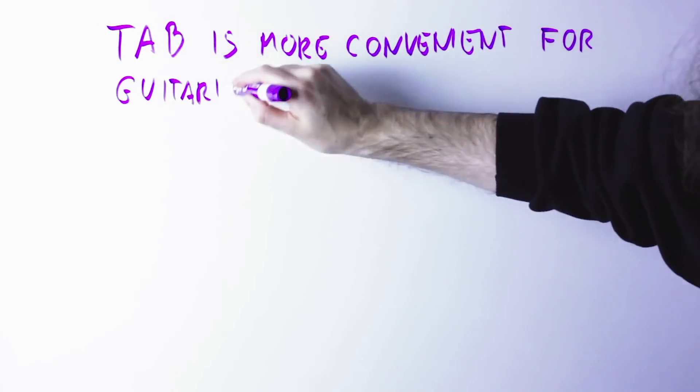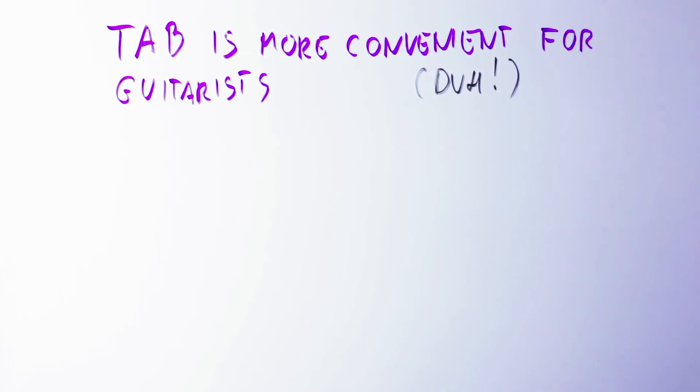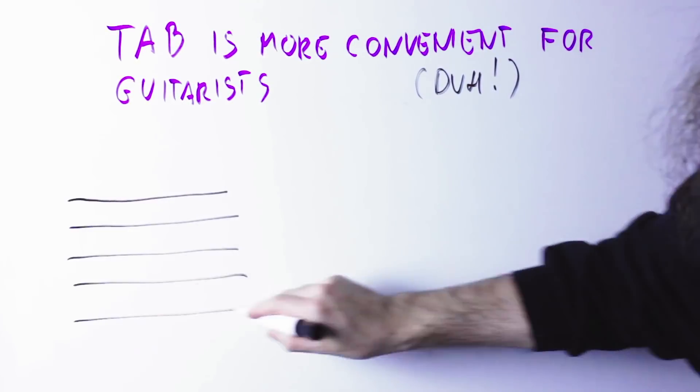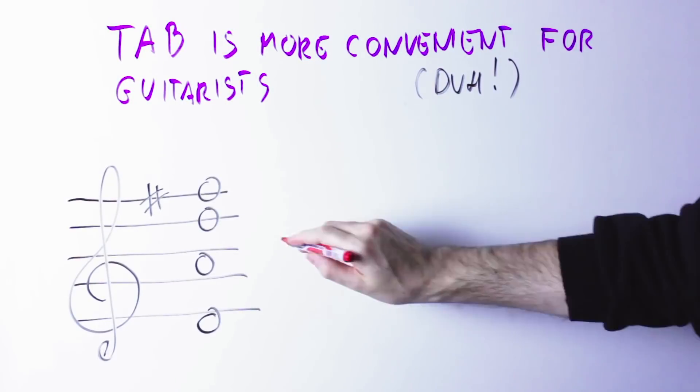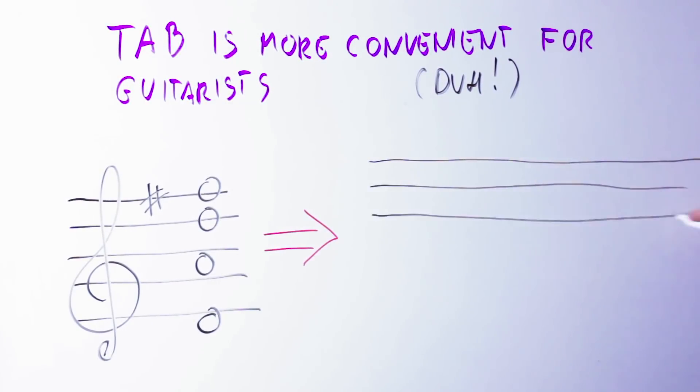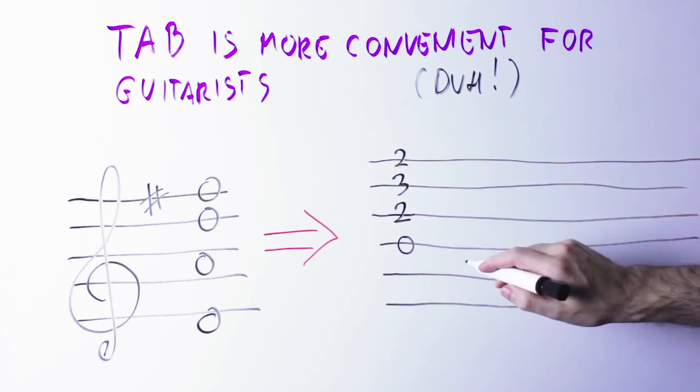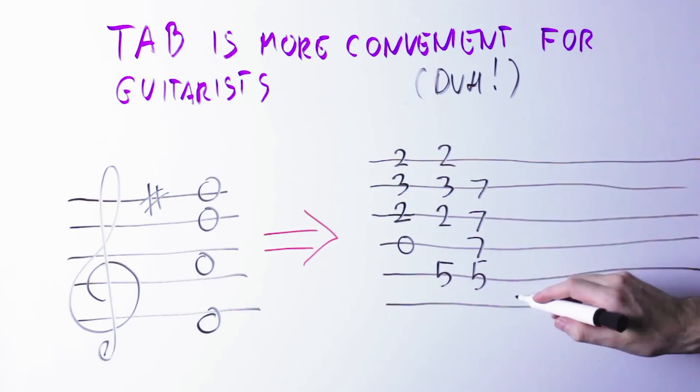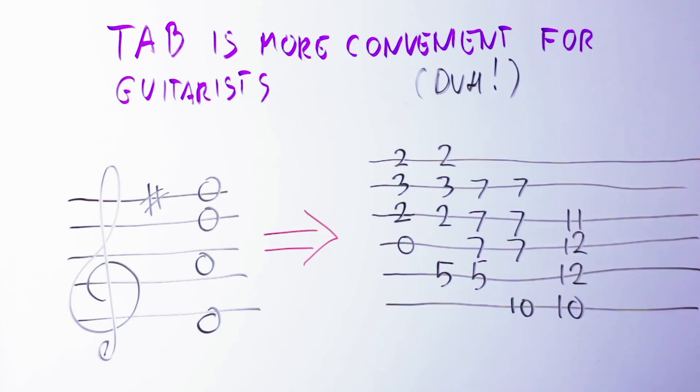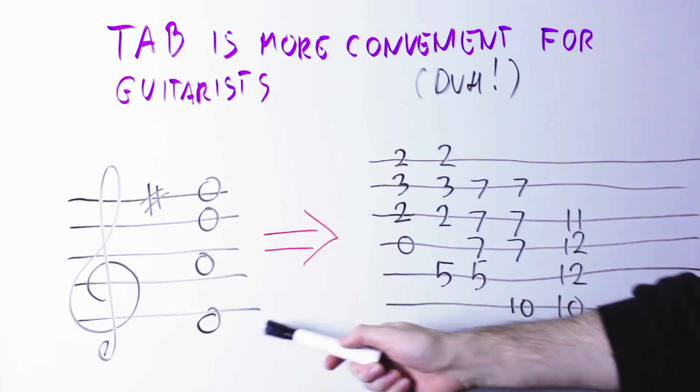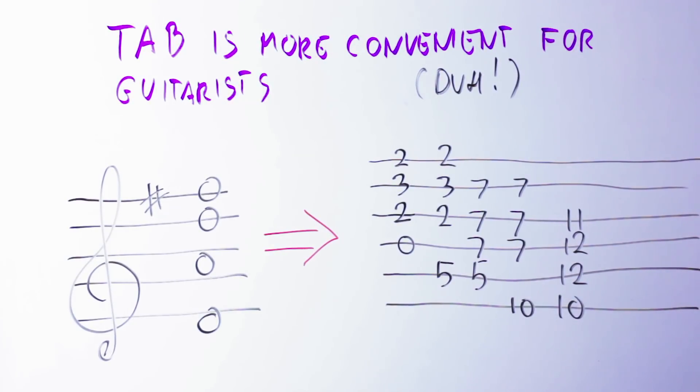For instance, tablature is much more convenient to communicate new concepts to a guitar player because tablature allows you to communicate exactly the fingering and the position of the music to play. For instance, if I were to play a D major chord and play those notes in standard notation, I would have at least those five different positions on the guitar.